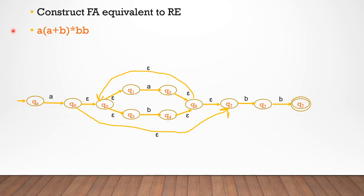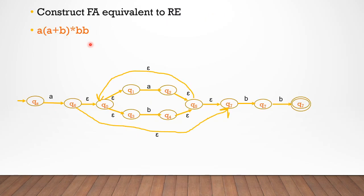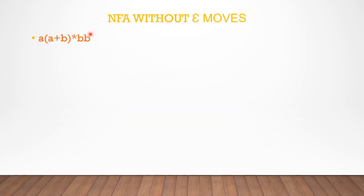So this is the finite automata equivalent to this particular regular expression. Just like this, we have a normal NFA. This is a into (a plus b) star into b — what does this regular expression say?